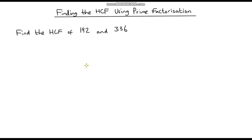I'm going to do one more example using this method — finding the highest common factor of 192 and 336. But before I do, pause the video and give it a go yourself.